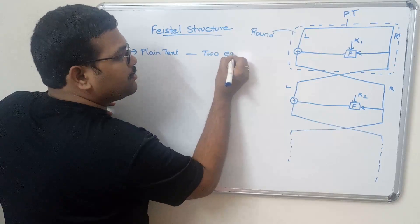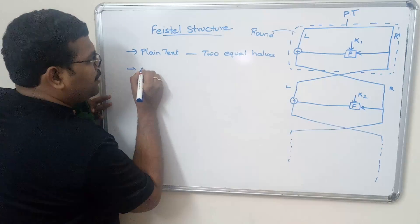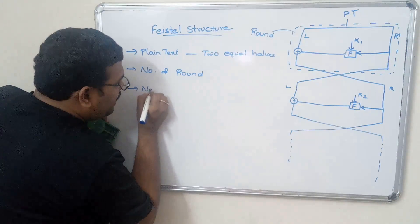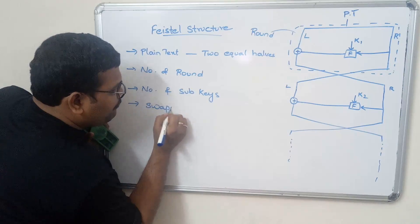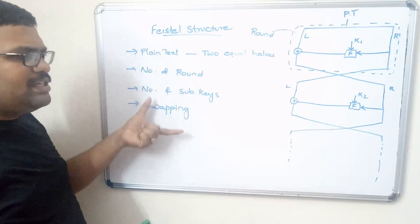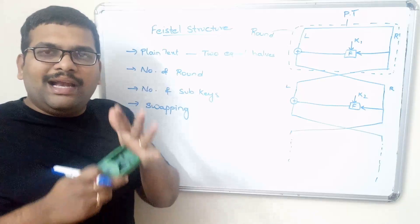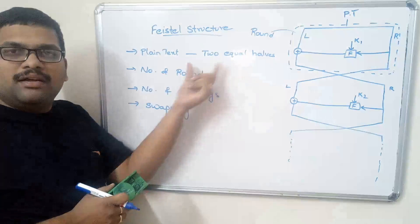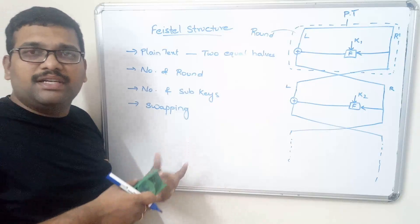To summarize: the plaintext is divided into two equal halves; it is processed in a number of rounds to get the ciphertext; a number of sub-keys are used; and swapping of the two halves — right to left and left to right — is performed. If any algorithm follows these concepts, we say that particular block cipher algorithm follows the Feistel structure. These are the block cipher design principles: two halves, number of rounds, number of sub-keys, swapping, sub-key size, and block size.